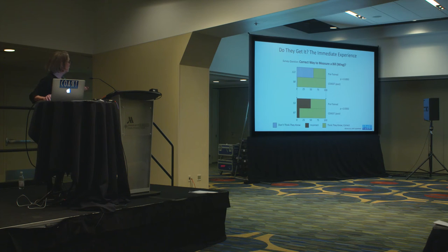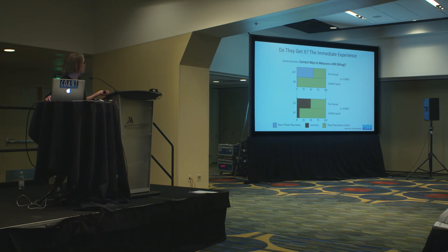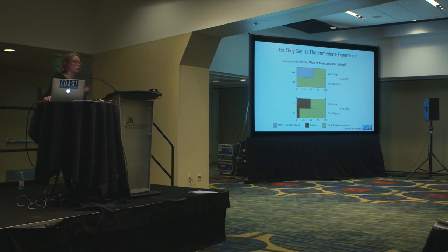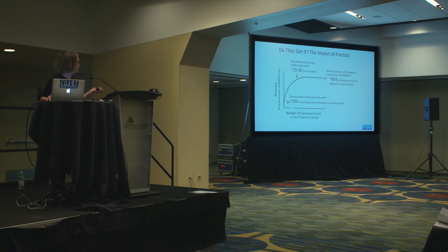Coasters, once they go through a training, get this data. These are coasters pre-trained versus just walked out of a training, or 48 hours after that, asking about the correct way to do a measurement. Gray is 'I don't even know the answer,' black is 'I got it wrong,' and green is 'I got it right.' This suggests that training itself gives people confidence to answer the question and they tend to get it right more often — the training works. Coming out of a training, they're about 70% accurate at identifying carcasses to species, and that accuracy moves up over time to about 85%. Training is good, but practice makes perfect.